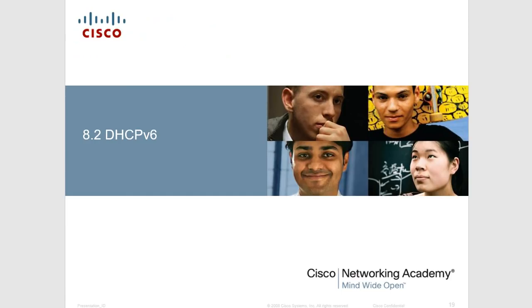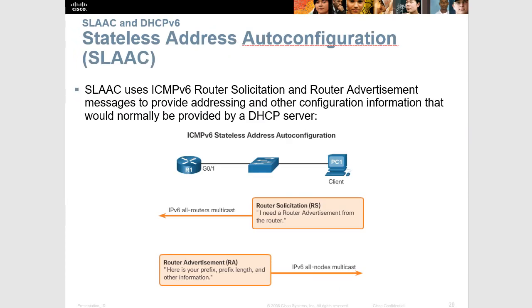Moving on to DHCPv6, which is more complicated than DHCPv4 because there are multiple ways to obtain your IP address, default gateway, and other information. You may remember SLAAC — stateless address auto configuration — where the router gives clients all their information. There's also SLAAC with DHCP, and full stateful DHCP where SLAAC isn't used at all. So we have three techniques: full SLAAC, SLAAC with DHCP, and stateful DHCP.